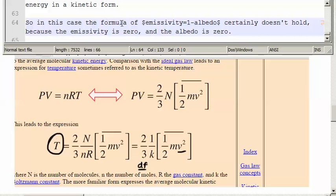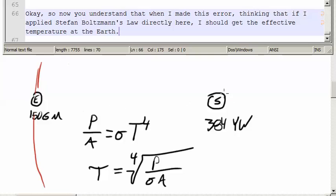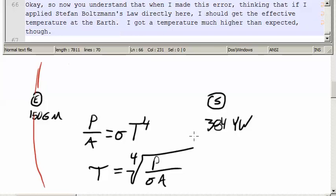It's not reflecting any light, it's just up there holding energy in a kinetic form. So, in this case, the formula of emissivity equals 1 minus albedo certainly doesn't hold because the emissivity is zero and the albedo is zero. It's just a mostly transparent hot gas. Okay, so I made this error thinking that if I applied Stefan Boltzmann's law directly here, I should get the effect of temperature at the Earth. I got a temperature much higher than expected, though,